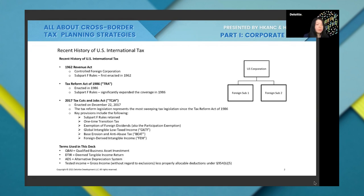The next major reform is the Tax Reform Act of 1986. Under this Act, the Subpart F rules were extended to cover more areas. The U.S. was taxed on net income earned by U.S. corporations, and the local country would tax the earnings of foreign sub one and foreign sub two. The Subpart F rules allow the U.S. to tax the income earned by foreign sub one.